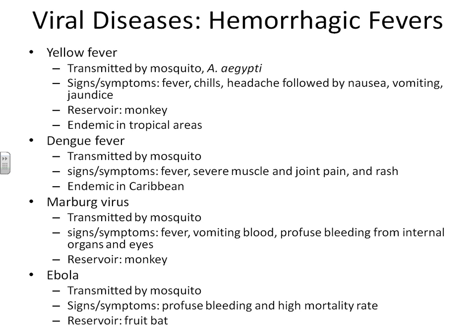The first hemorrhagic fever we'll discuss is called yellow fever. Yellow fever is a hemorrhagic fever that is transmitted by the mosquito Aedes aegypti. This is a mosquito that requires fairly high temperatures to complete its normal life cycles. Therefore, yellow fever is endemic in tropical areas and much less common in areas that get cooler.